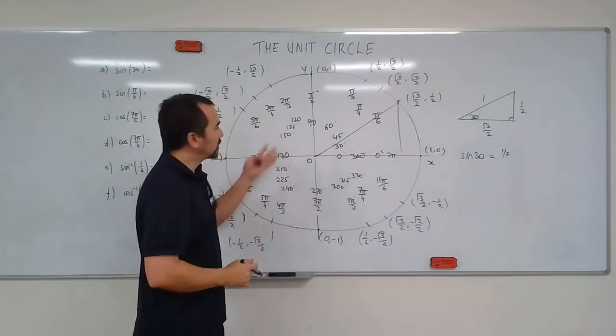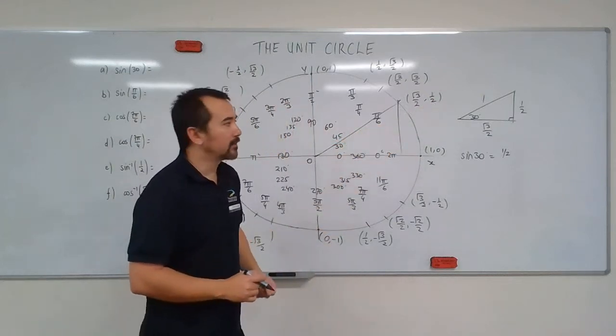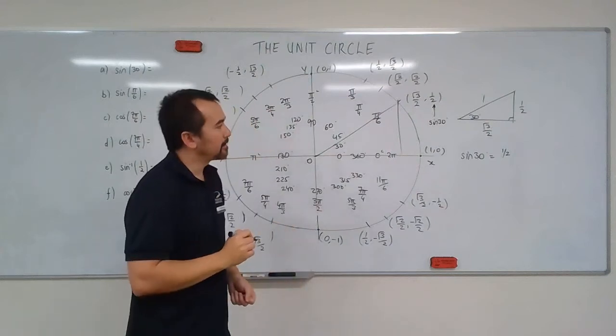And can we see that on our unit circle? Yes, we can. There's my 30 degrees. There is my 1 half. So, in fact, this 1 half is equal to sine 30. Interesting.